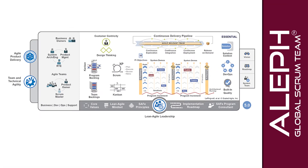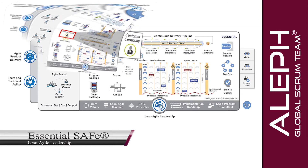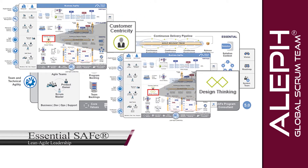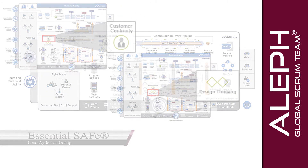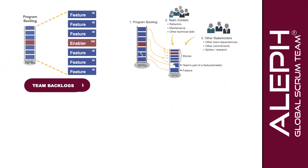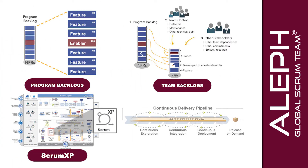The essentials of Essential SAFe are built around principles such as customer centricity and design thinking, as well as systems to develop software through program backlogs, team backlogs, Scrum XP, and other developed systems like the continuous delivery pipeline.